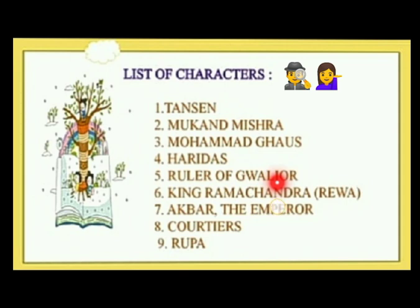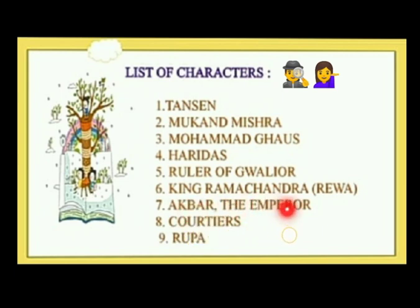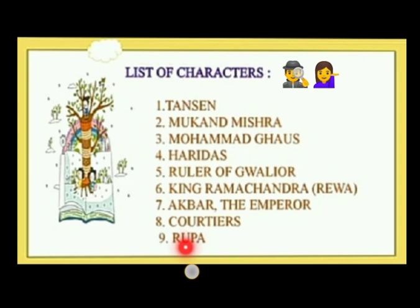Number five: the Ruler of Gwalior. His name is not mentioned in the story, so we will just call him the Ruler of Gwalior. Number six: King Ramachandra, the ruler of Rewa. Number seven: Akbar, the Emperor of India. Number eight: Courtiers. Number nine: Rupa, a singer who sang the Megh Raag to save Tansen.